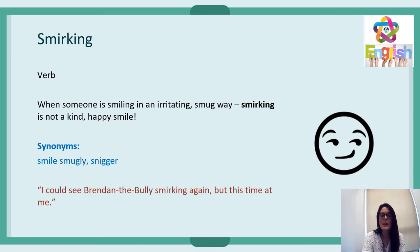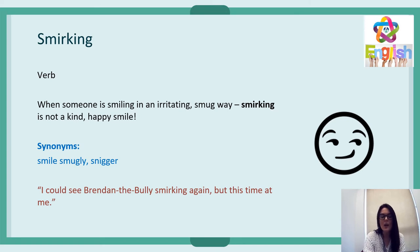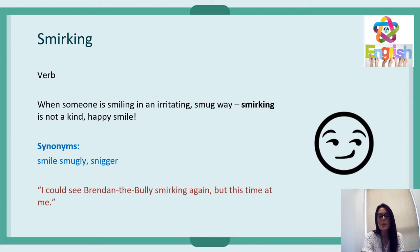'Smirking' — this is a really interesting verb. A smirk is when someone's smiling in an irritating, smug way. It's not a happy smile; it's kind of a mean smile. Synonyms for smirk are 'smile smugly' or 'snigger.' Choosing correct vocabulary is really important, and as predicted, it's to do with Brendan the bully: 'I could see Brendan the bully smirking again, but this time at me.'